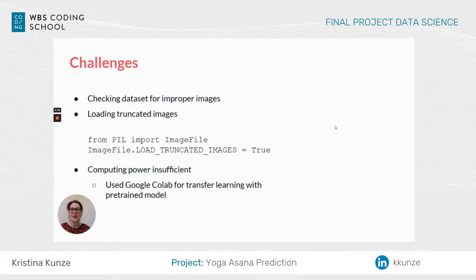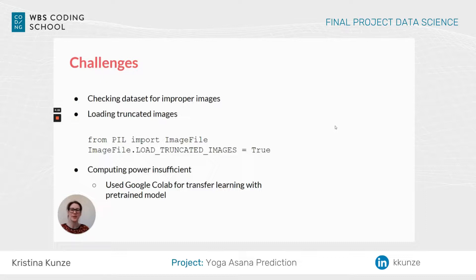During my work, I also faced some challenges. I had some improper images in my dataset that I had to check before importing. I also had to figure out how to load truncated images, and those two lines of code saved my model from failing all the time and basically saved my project. The pre-trained model was only working on Google Colab because of insufficient computing power.